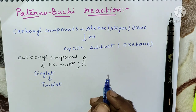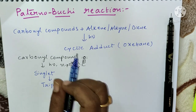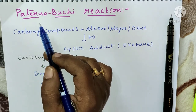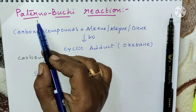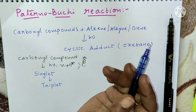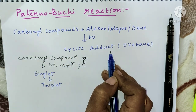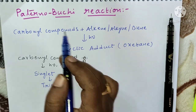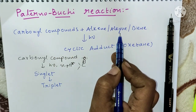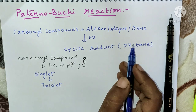Students, in this session, we are going to explain a wonderful reaction in photochemistry — that is the Paterno-Büchi reaction. It gives a cyclic adduct whenever carbonyl compounds react with an alkene, alkyne, or diene.